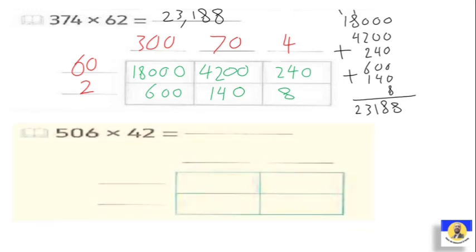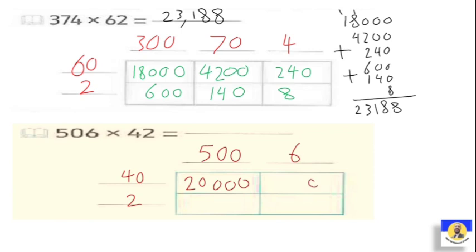The next one: five hundred six by forty-two. First, we write each number by its place values — five hundred and six on top, forty and two on the side. We multiply: forty by five hundred — put three zeros — and four by five equals twenty. Forty by six: put zero, four by six equals twenty-four. Then two by five hundred: put two zeros, and two by five equals ten. And two by six equals twelve.